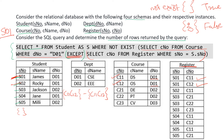Moving on to student S02. The first part of the inner query is the same — it gives C11, C12 again. Only the second part changes. For S02 the corresponding C numbers from the register table are just C11. So we take C11, C12 set difference C11, which gives us C12. This is a non-empty set, so NOT EXISTS returns false and this student will not be included.